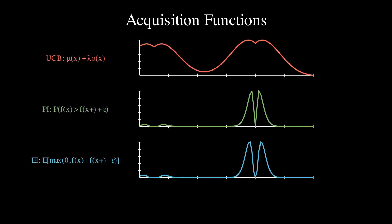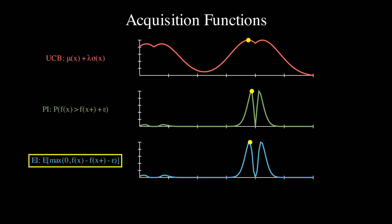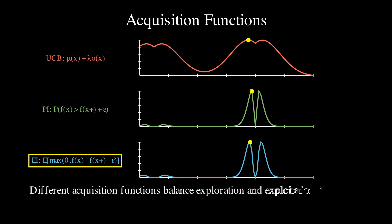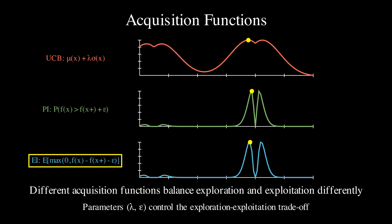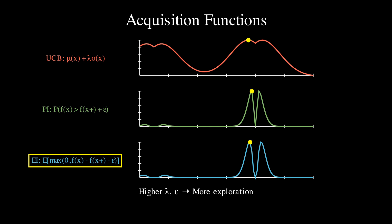Other popular acquisition functions include probability of improvement (PI) and expected improvement (EI). The probability of improvement measures how likely we are to improve upon our current best location, calculated as the probability that f(x) is greater than f(x+) + epsilon, where x+ is our current best location and epsilon is a small positive number. The expected improvement goes one step further, considering not just whether we will improve but by how much — it's the expected value of max(0, f(x) - f(x+) - epsilon). This rewards locations that might give us large improvements. By adjusting parameters like lambda or epsilon, we can control this trade-off: higher values favor exploration of uncertain areas, while lower values concentrate on exploiting promising regions.